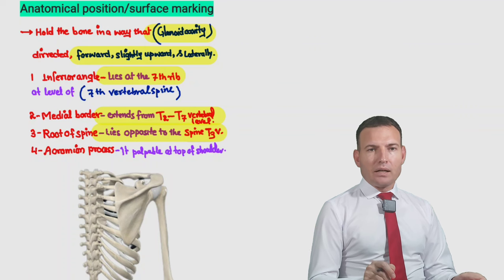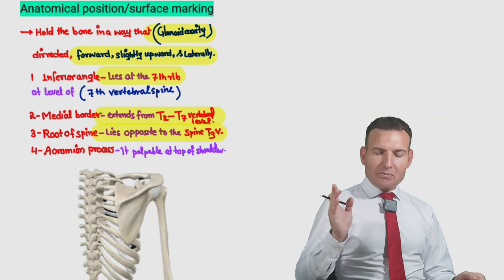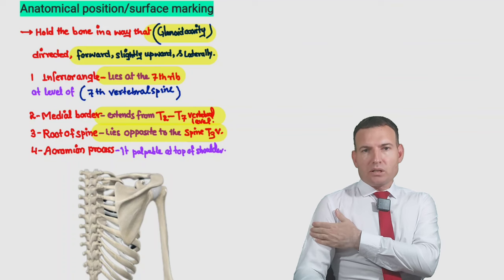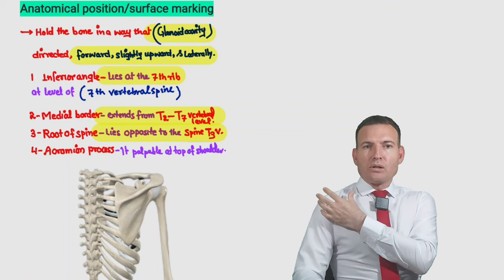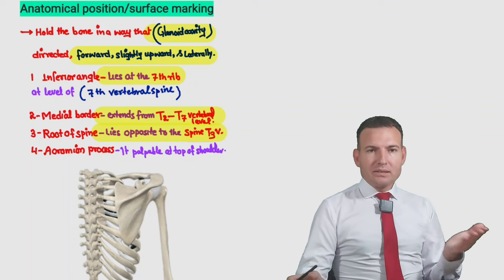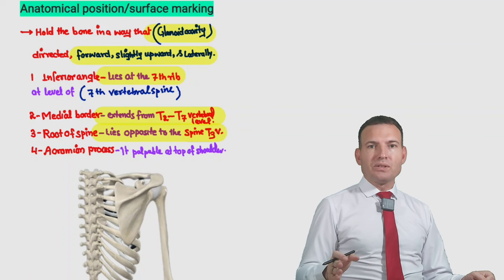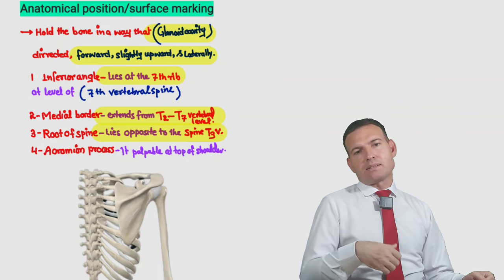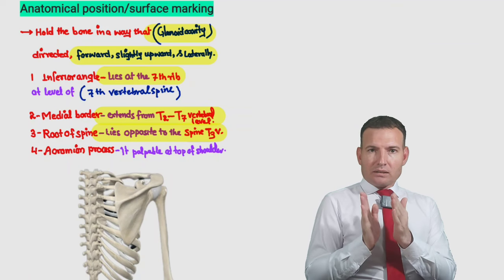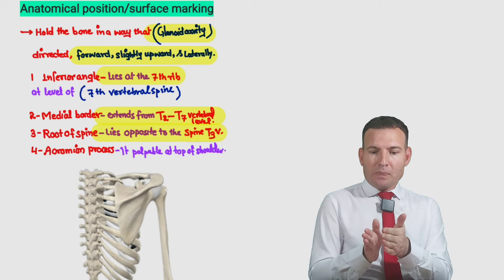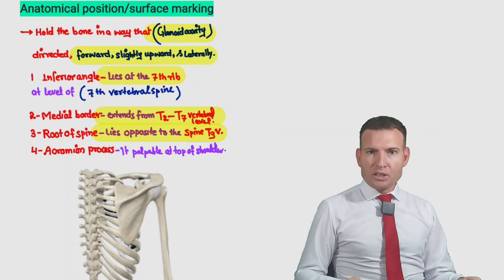Let's start with the anatomical position and surface marking of the scapula. First, hold the bone so that the glenoid cavity comes on the lateral side — this is because the humerus comes from the lateral side to form the glenohumeral joint. The glenoid cavity is not facing strictly laterally, as many students think. It actually faces forward, slightly upward and laterally — this is the anatomical position of the glenoid cavity.